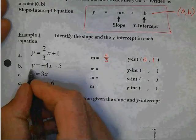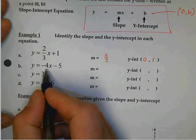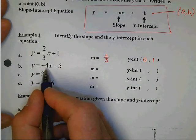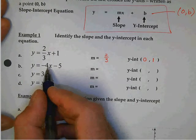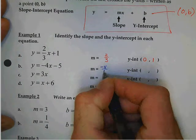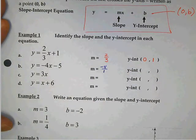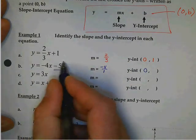How do I write negative 4x minus 5? How do I write this negative 4 as a fraction? What am I going to change it to? So let's write our slope, negative 4 over 1. And then my y-intercept, 0 comma negative 5.